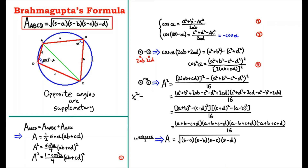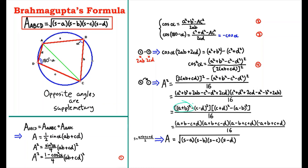Letting 2(AB plus CD) equal X and (A squared plus B squared minus C squared minus D squared) equal Y, we get the factored form. Grouping into four sections and applying the difference of squares identity again, we get (A plus B) squared minus (C minus D) squared, times (C plus D) squared minus (A minus B) squared, all divided by 16.